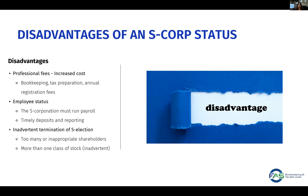The disadvantages include increased costs for bookkeeping, accounting, tax preparation, and annual registration fees. The S-Corporation must run payroll — if you are the sole shareholder and want to pay yourself a salary, that must go through the payroll process. You must ensure that wages are timely deposited and that payroll taxes withheld from employee salaries are reported and paid to the government entities.